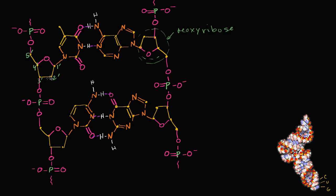To turn this into RNA, or to make it look like RNA, on the two prime carbon, we want to turn the deoxyribose into just ribose, so we would add a hydroxyl group right over here.